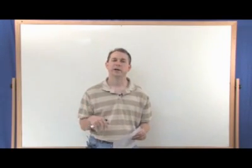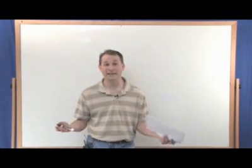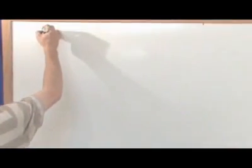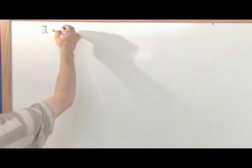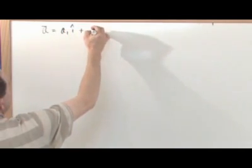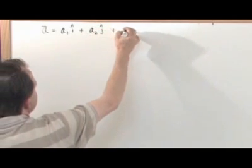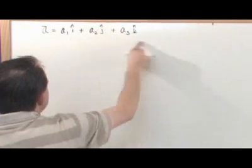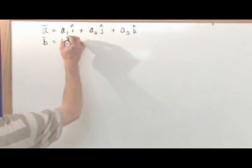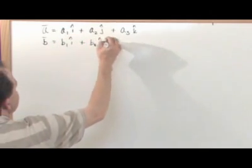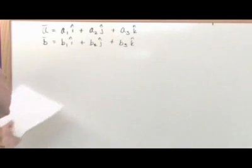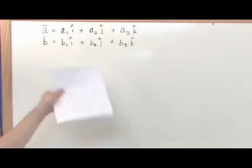Let me write the dot product down on the board, and then we'll talk about what it means — physically what it means — and how you would use it, and we'll solve some problems. If you have a vector a with components a₁ in the x direction, a₂ in the y direction, and a₃ in the z direction, and another vector b with components b₁ in the i direction, b₂ in the j direction, and b₃ in the k direction — these a's and b's are just numbers, just like all the other problems we've been doing.